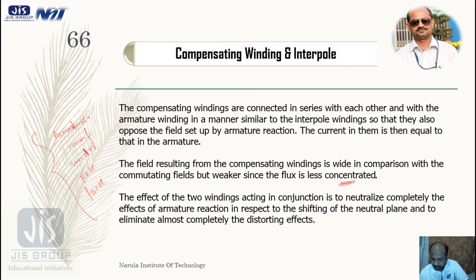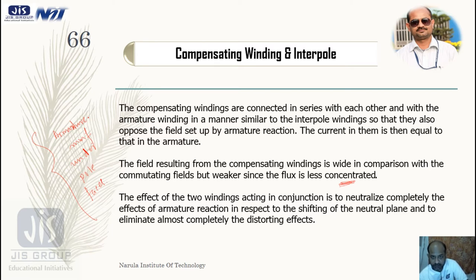One more thing to remember: provision of compensating winding requires additional space in the main pole faces, and it is made of copper, so it involves a larger cost. That is why in case of smaller machines we do not use compensating winding or interpoles. Rather, we use compensating winding only in case of larger machines.